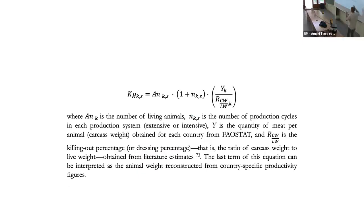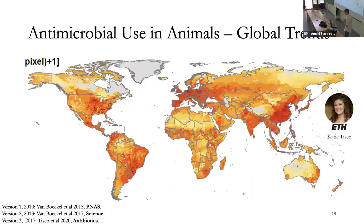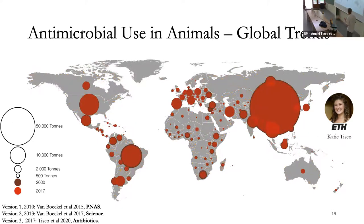The metric we use to quantify livestock biomass combines: the number of animals (for which we have maps), the number of production cycles per year (for example, with modern farming taking 30 days to produce a chicken, you can have 12 cycles per year), and the amount of meat taken from the animal — essentially the ratio between live weight and carcass weight. Multiplying all of this together, we obtain a map with the amount of antimicrobials used in animals in every 10-by-10 kilometer pixel in the world.